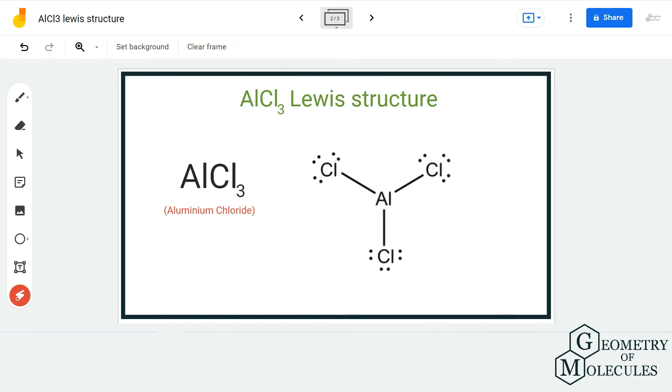To make sure, you can also calculate the formal charges for aluminum and chlorine atoms for this Lewis structure. I am going to leave the link for formal charge calculator in the description box below. You can also use this formula to find out the formal charges, but the formal charges will come out to be zero, and hence this is the most accepted and relevant Lewis structure for AlCl₃.